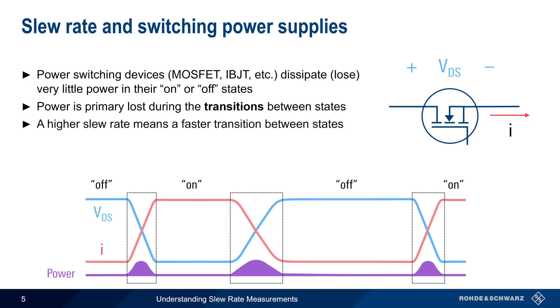A higher slew rate means these transitions happen more quickly, and thus a higher slew rate will decrease the amount of power lost.